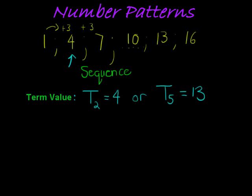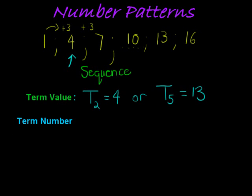That's the first thing we have when we look at any sequence. The next thing is the term number. The term number is the position of a certain term. So for example, if the term value is 4, the term number is 2, and we use N to indicate that — N is the term number.